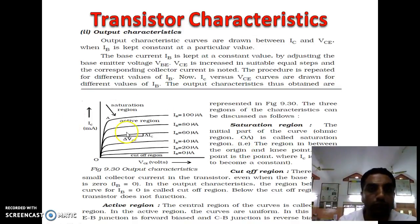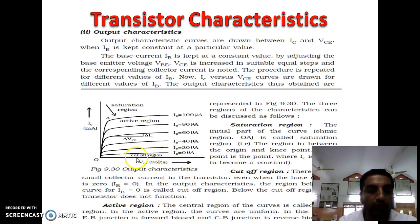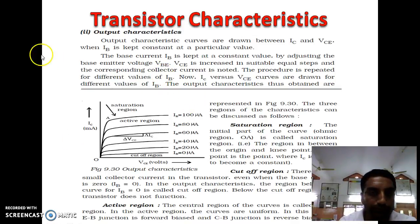In the output characteristic, output voltage VCE is plotted versus collector current IC for constant base current IB. When IB is zero, as VCE increases, the current increases slightly and then remains nearly constant. For different values of IB — 20, 40, 60, 80, and 100 microamperes — we get a family of curves. From this graph, the saturation region, cutoff region, and active region are clearly identified.